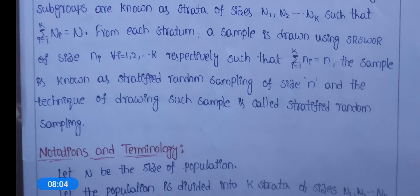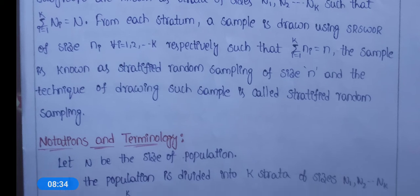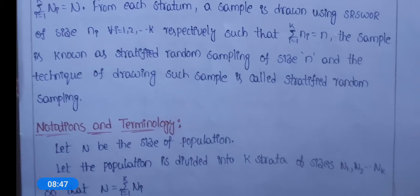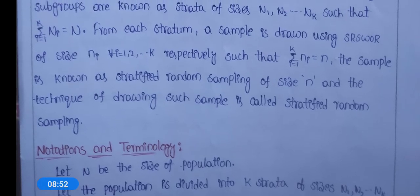From each stratum, a sample is drawn using SRSWOR of size small ni. The combined sample is known as a stratified random sample of size small n. The technique of drawing such samples is called stratified random sampling.